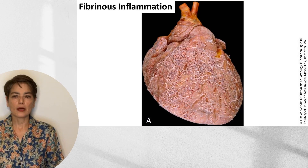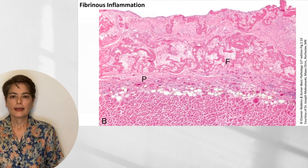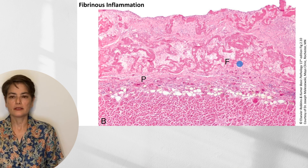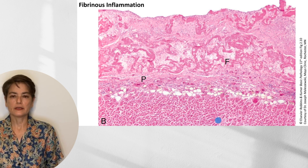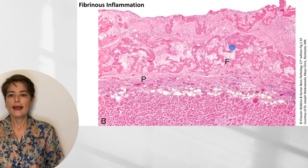Let's look at a gross example of fibrinous pericarditis. Here you can see the surface of the heart with this meshwork — it just looks like a piece of gauze strung over the pericardium. In the histology, you can see here is the pericardium, here is the deposited fibrin — more like an amorphous coagulum — and here are the cardiac myocytes. This also helps explain why we call it fibrinoid necrosis: the pink material deposited in the vessel wall, for example in polyarteritis nodosa, has the same quality as what we see here in fibrinous inflammation.